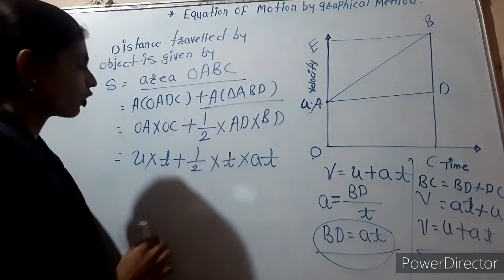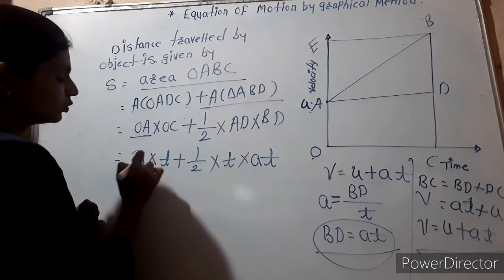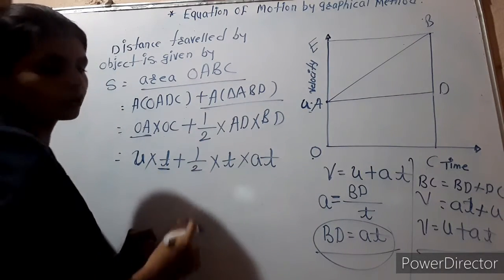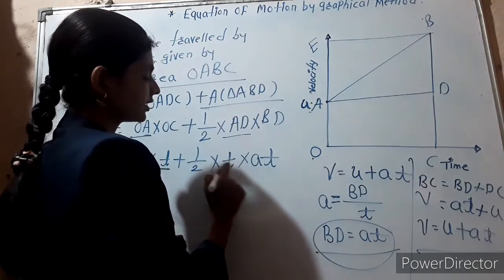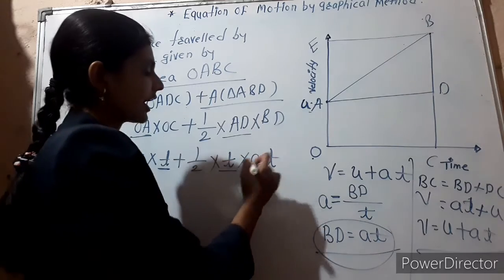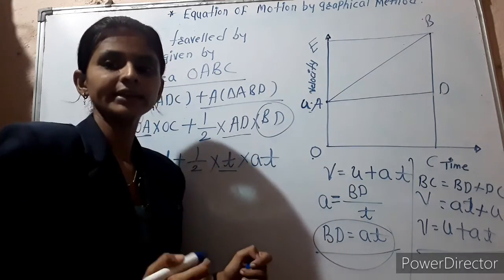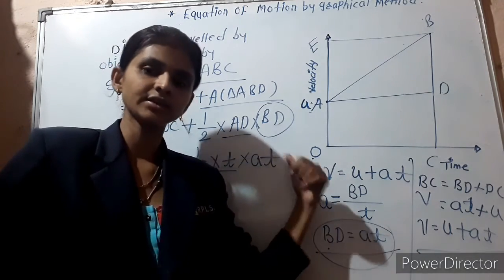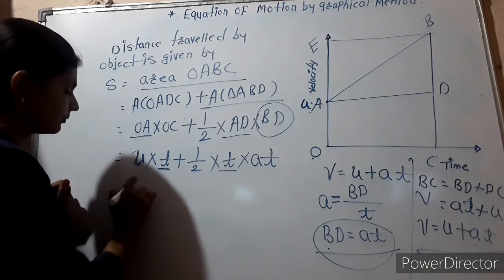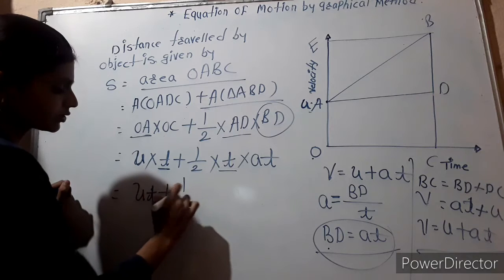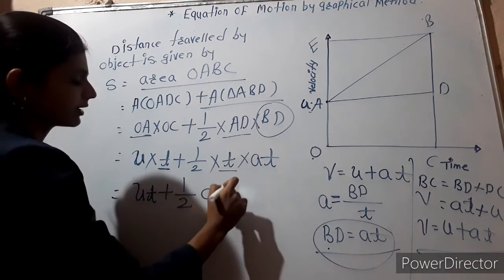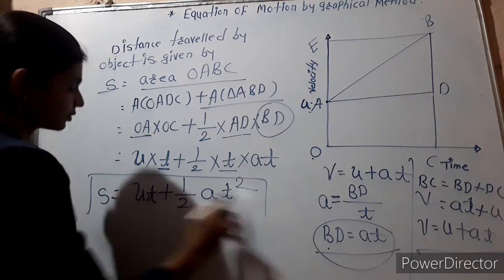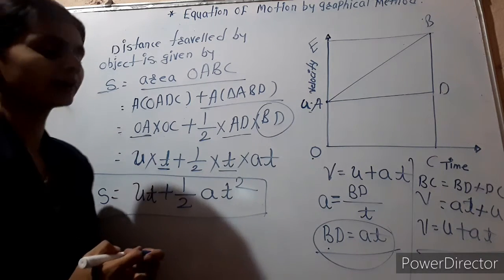Now we replace all the values. oa means the initial velocity u, oc represents the time t, then one-half as it is, ad is also representing time t, and bd is the change in velocity which equals at. So solving: u multiplied by t gives ut, plus one-half times a times t multiplied by t equals at squared. So the second equation of motion is s is equal to ut plus one-half at squared.